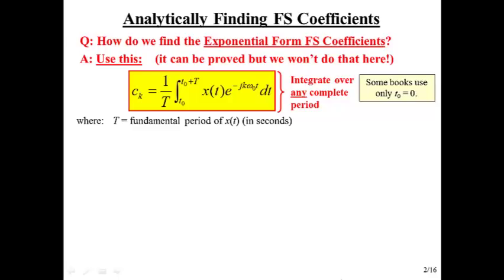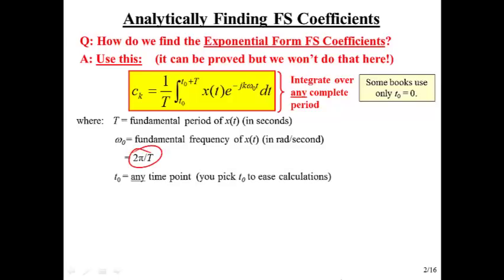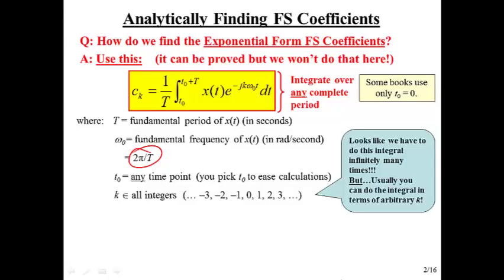Capital T is our fundamental period, which you can look at the x of t and pick that off. Omega sub 0 is the fundamental frequency. Once you know T, easy to find with this formula. T 0, again, any time point that you wish. Some are easier than others.